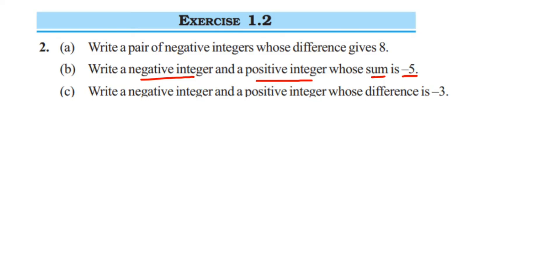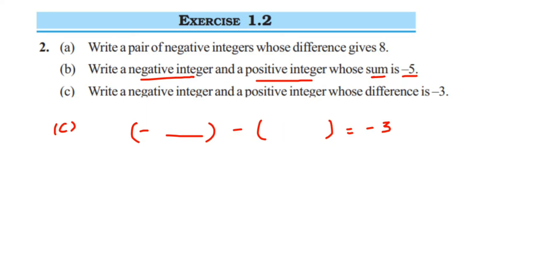Now let's move on to the last one: write a negative integer and a positive integer whose difference is minus 3. So you take a negative number and subtract a positive number to get minus 3. This is similar to the first question, but there both were negative; here one is negative and one is positive. We want minus 3, and here we have a minus sign and the second number is positive. Minus into plus remains minus only, so both numbers end up having a minus sign — minus into plus stays minus, so we're doing addition of two negative numbers.